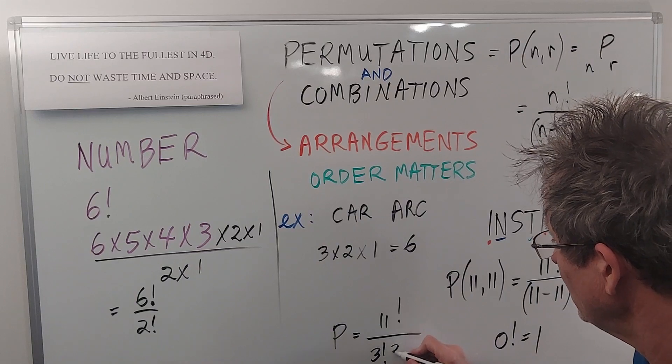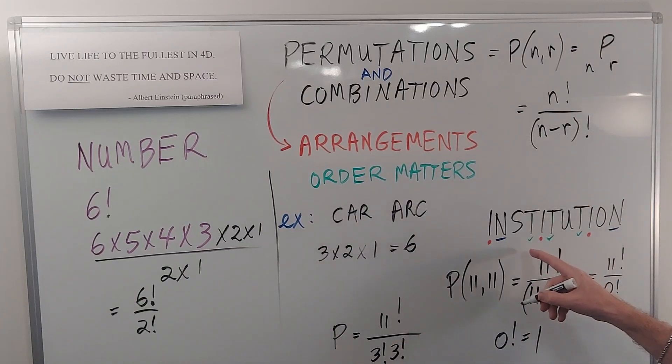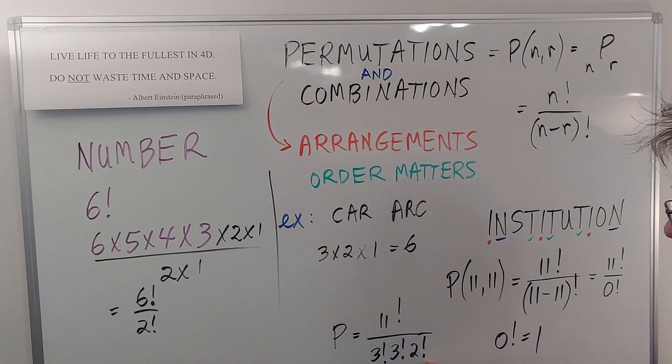Divided by another 3 factorial because there's three t's, and divided by 2 factorial because there's two n's. Of course, you don't need that factorial for 2 because 2 times 1 is just 2, but for completeness we'll put it on there. So when there's letters that are the same, you have to divide by that number factorial.